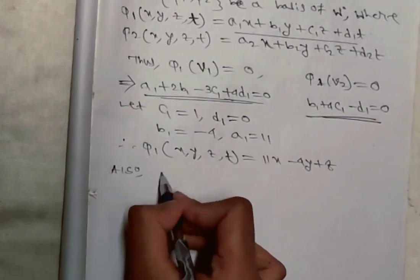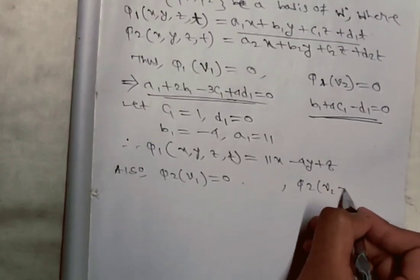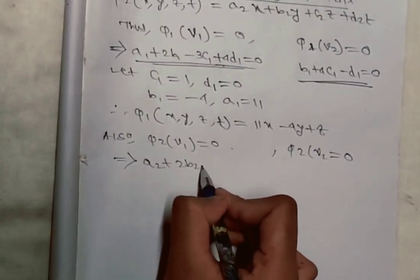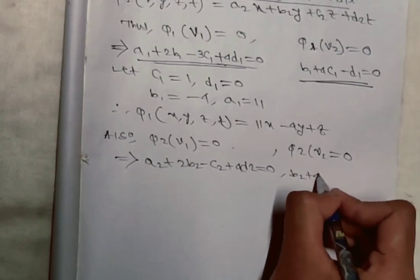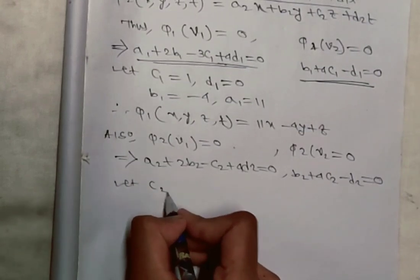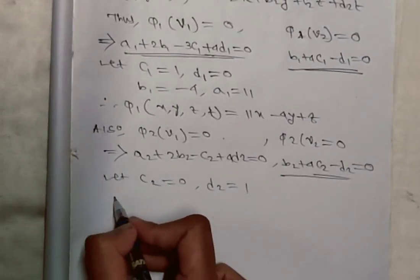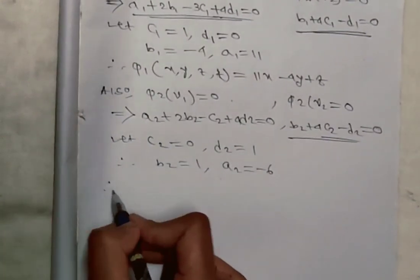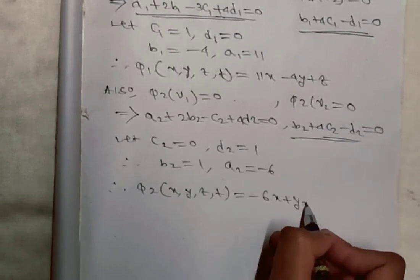Similarly, φ₂(V₁) = 0 and φ₂(V₂) = 0 gives: a₂ + 2b₂ - 3c₂ + 4d₂ = 0 and b₂ + 4c₂ - d₂ = 0. Now let c₂ = 0 and d₂ = 1. Putting these values, we get b₂ = 1 and a₂ = -6. Therefore φ₂(x,y,z,t) = -6x + y + t.